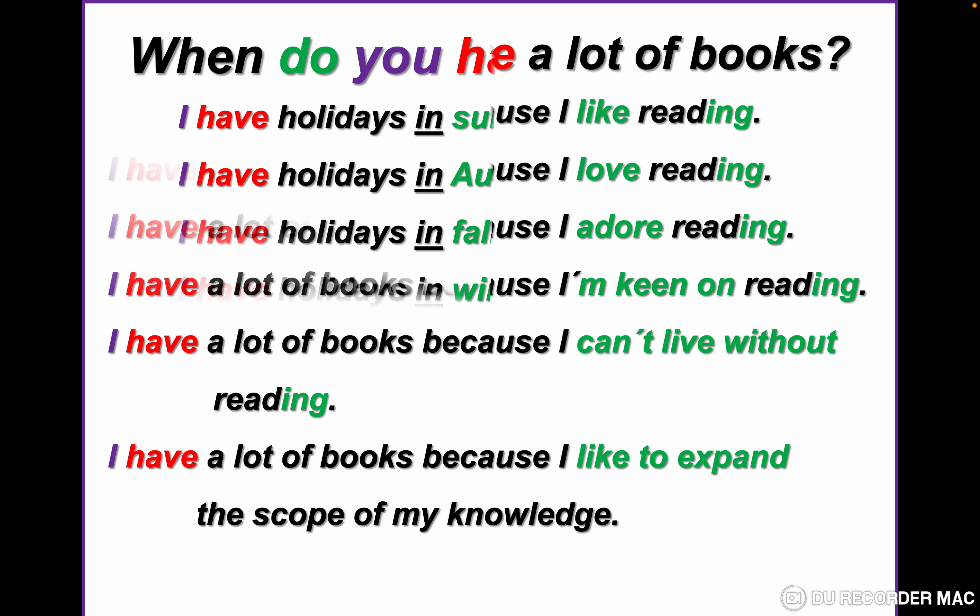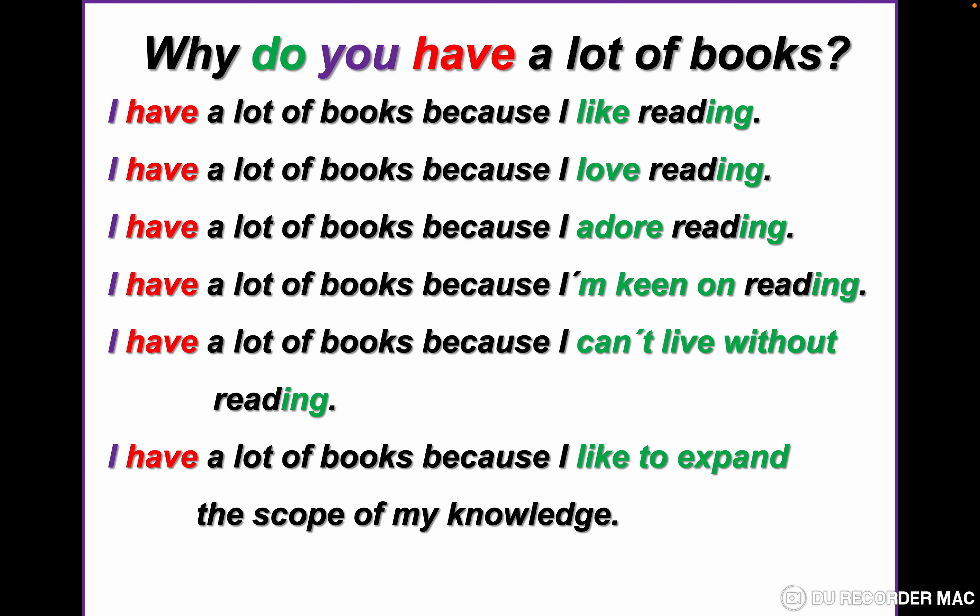Now we change the WH word to 'why'. Why do you have a lot of books? I have a lot of books because I like reading. I have a lot of books because I love or adore reading. I have a lot of books because I am keen on reading — 'keen on' means I love. I have a lot of books because I can't live without reading; reading for them is like breathing. I have a lot of books because I like to expand the scope of my knowledge.